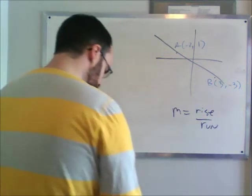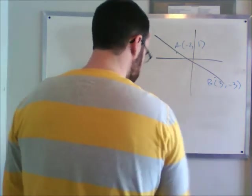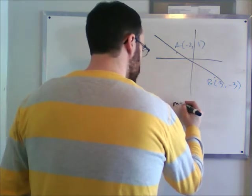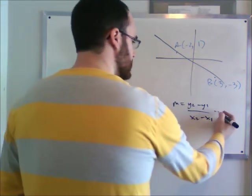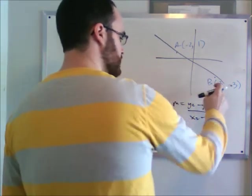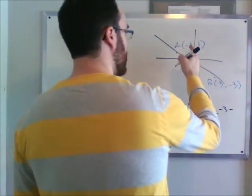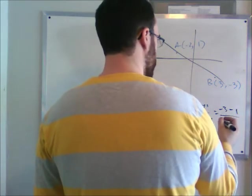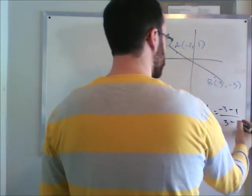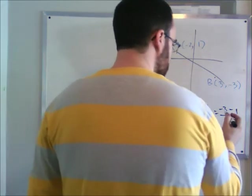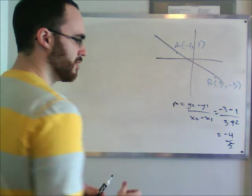So we want to find the slope between these two things first. That's very important, which is just y2 minus y1 over x2 minus x1. M equals y2 minus y1 over x2 minus x1. This is equal to - this is point 2, we'll say. y2 is -3 minus y1, which is 1, over x2, which is 3, minus x1, which is -2. So minus minus 2 is plus 2, which gives us -4 over 5. So that's our slope. For every 4 it goes down, it goes to the right, 5.